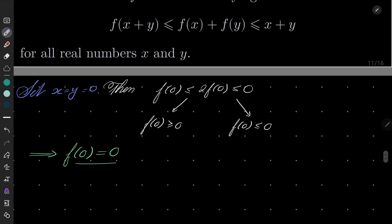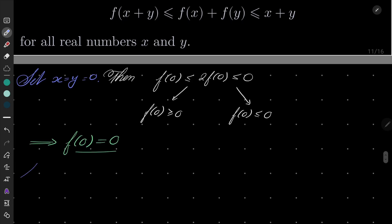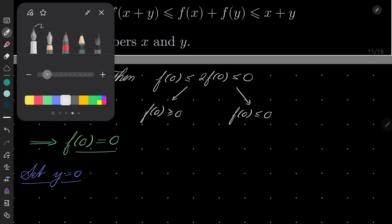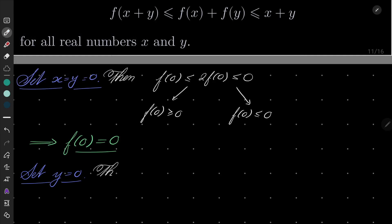Okay, so now let's set only y to be 0. And we get the following. f(x) ≤ f(x) + f(0). By now we know that f(0) is 0, so that is less than or equal x.